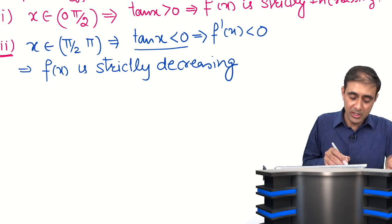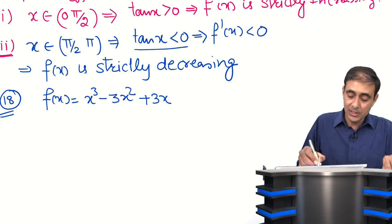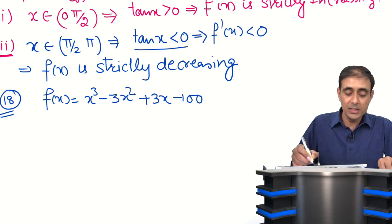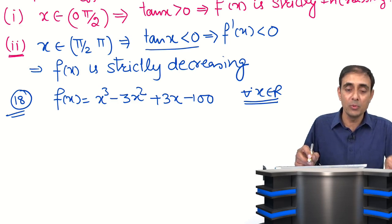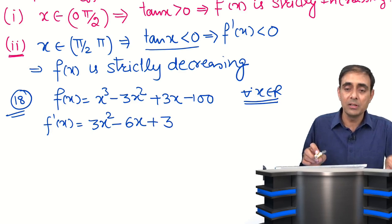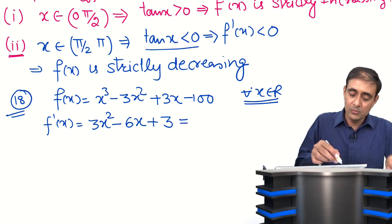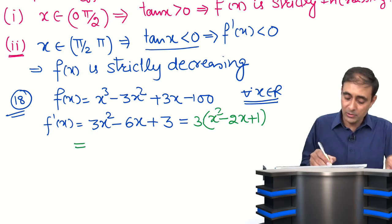Let us see question number 18: prove that f(x) = x³ - 3x² + 3x - 100 is increasing in ℝ. f'(x) = 3x² - 6x + 3. Taking 3 common, this gives 3(x² - 2x + 1), which is also equal to 3(x - 1)².